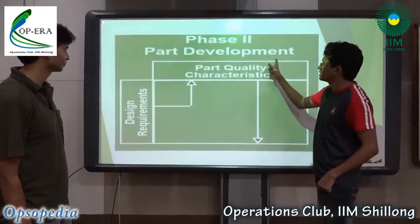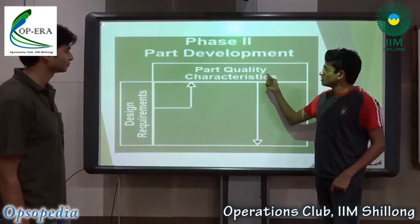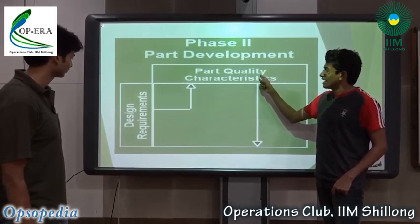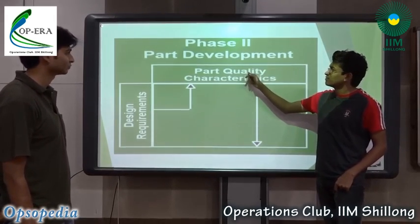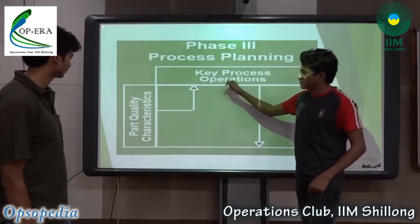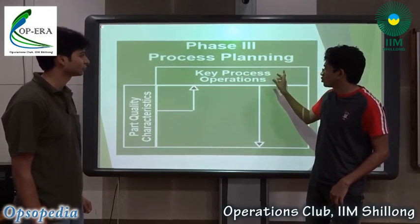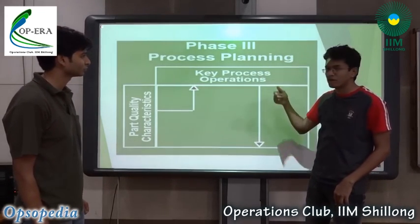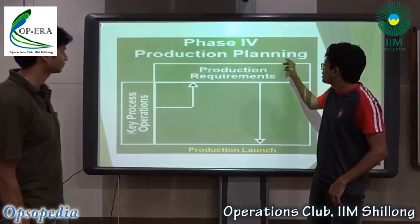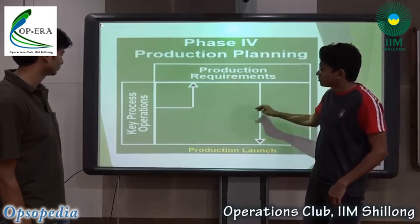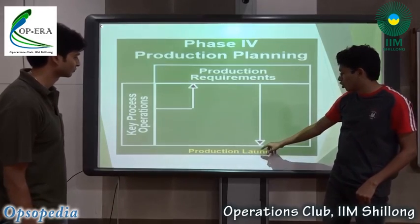The second phase is the part development stage, where you take your design requirements to determine the final quality characteristics, working with your suppliers and vendors. The third phase is process planning, taking part quality characteristics to the final key process operations in your production cycle. The fourth and final phase is production planning, taking process operations to production requirements, which helps you launch the product.